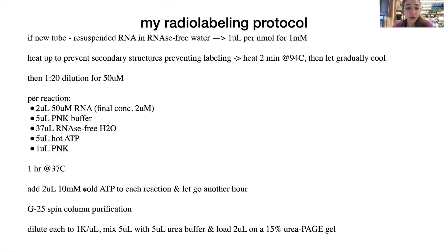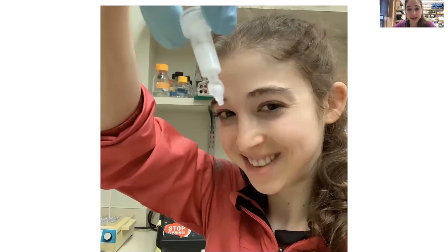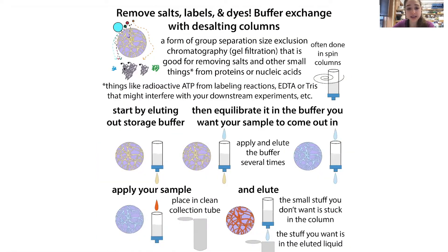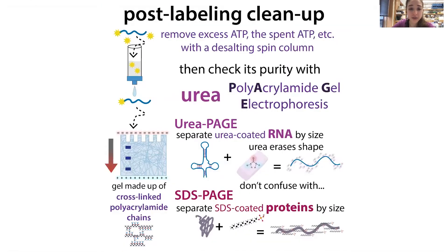After the reaction, I purify using a G25 or G50 desalting column. These are like a mini gel filtration — they have tiny pores, and small things like ATP and salts get trapped into the pores of the beads, while larger things like your RNA go around and pass through. When you centrifuge and stop, your RNA has passed through while the ATP and salts are trapped in the column.